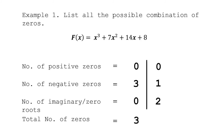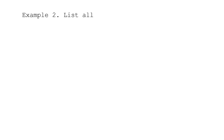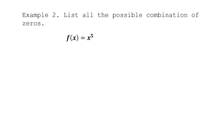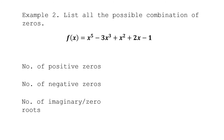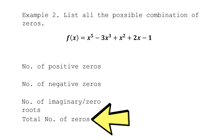Let's discuss a second example to better understand how to list all possible combinations of zeros. Given this polynomial function, we will identify the combinations of positive zeros, negative zeros, and imaginary or zero roots, as well as the total number of zeros. To identify the total number of zeros, look at the degree of the function. The highest exponent is 5, so the total number of zeros is equal to 5.